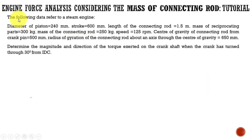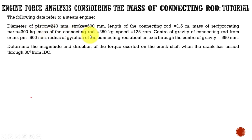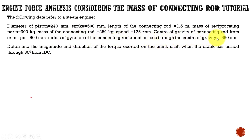Let me read the problem. The following data refer to a steam engine: diameter of piston is 240 mm, stroke 600 mm, length of the connecting rod is 1.5 meter, mass of reciprocating parts is 300 kg, mass of the connecting rod is 250 kg, speed is 125 rpm, center of gravity of connecting rod from crank pin is 500 mm, radius of gyration of the connecting rod about an axis through the center of gravity is 650 mm.